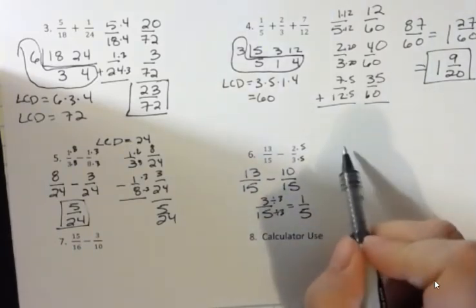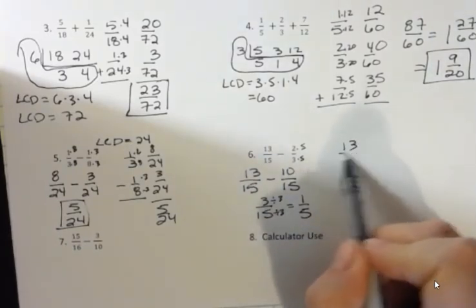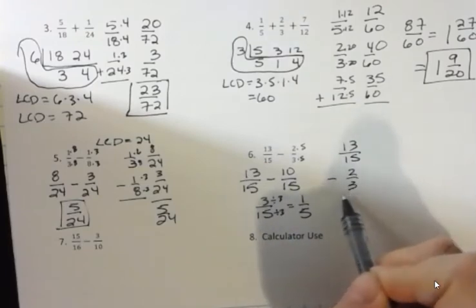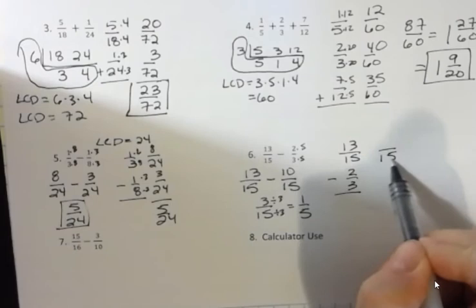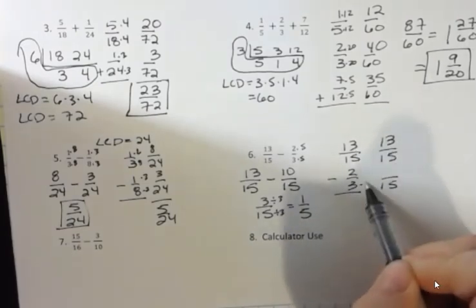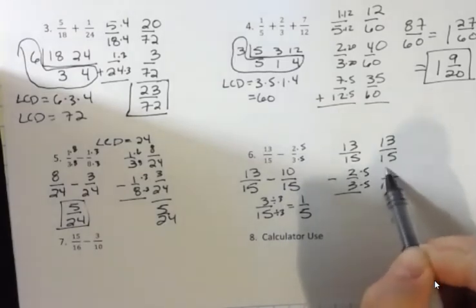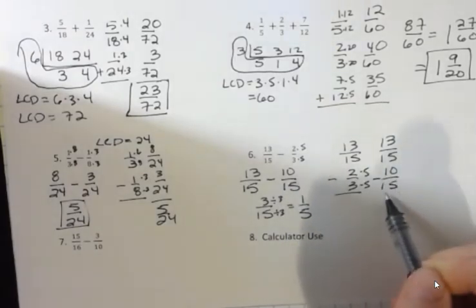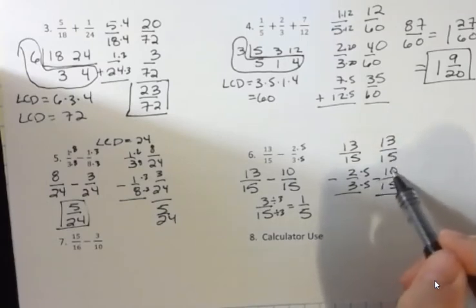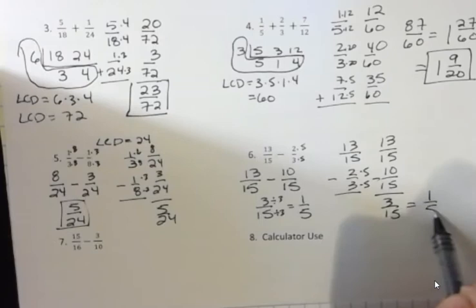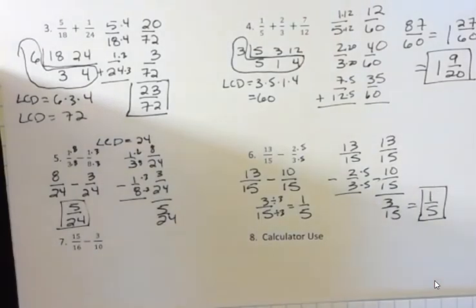If I want to look at that vertically, I have 13 15ths minus 2 3rds. And then I have the common denominator of 15. This one didn't change, but this one I have to multiply by 5, which gives me 10. And you might want to write your minus sign out here so you don't forget it. 13 minus 10 is 3 15ths, which we just saw was equal to 1 5th. So you work that in the way that you like to do it, horizontally or vertically.